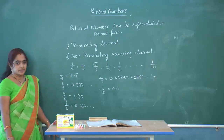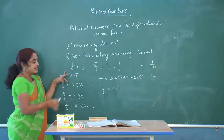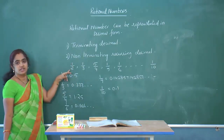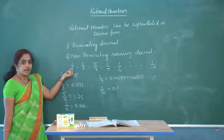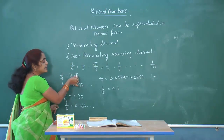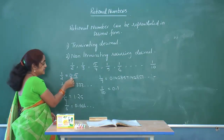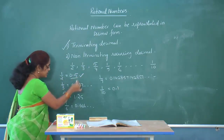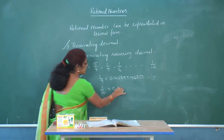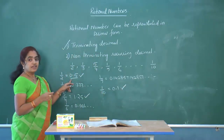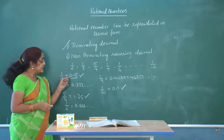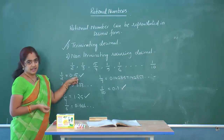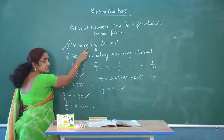If you observe, when dividing 1 by 2, we get a remainder of 0. When dividing the numerator with a denominator and the remainder is 0, the decimal part is finite — we call that a terminating decimal. So 1/2, 5/4, and 1/10 are terminating decimals because the division gives remainder 0 and the decimal part is finite.